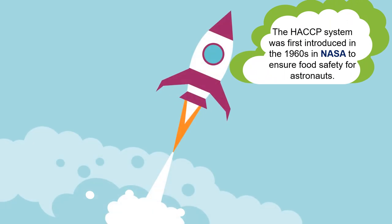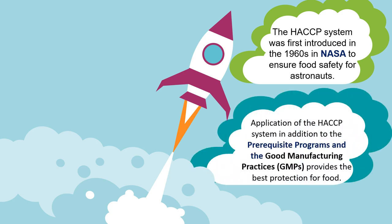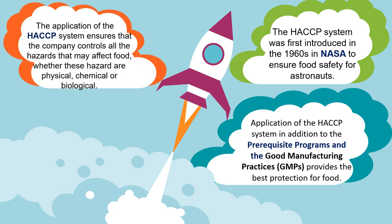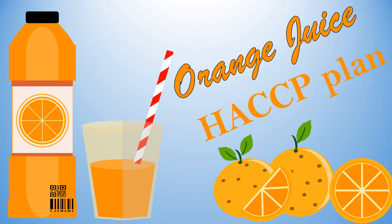The HACCP system was first introduced in the 1960s at NASA to ensure food safety for astronauts. The application of the HACCP system, in addition to the prerequisite programs and GMPs (Good Manufacturing Practices), provides the best protection for food. The HACCP system ensures that the company controls all types of hazards: physical, chemical, biological, or other types.